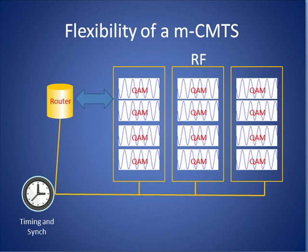For example, if the cable MSO wants to support an application that requires huge amounts of RF capability but relatively little in the way of routing resources, a configuration such as the one shown can be configured.